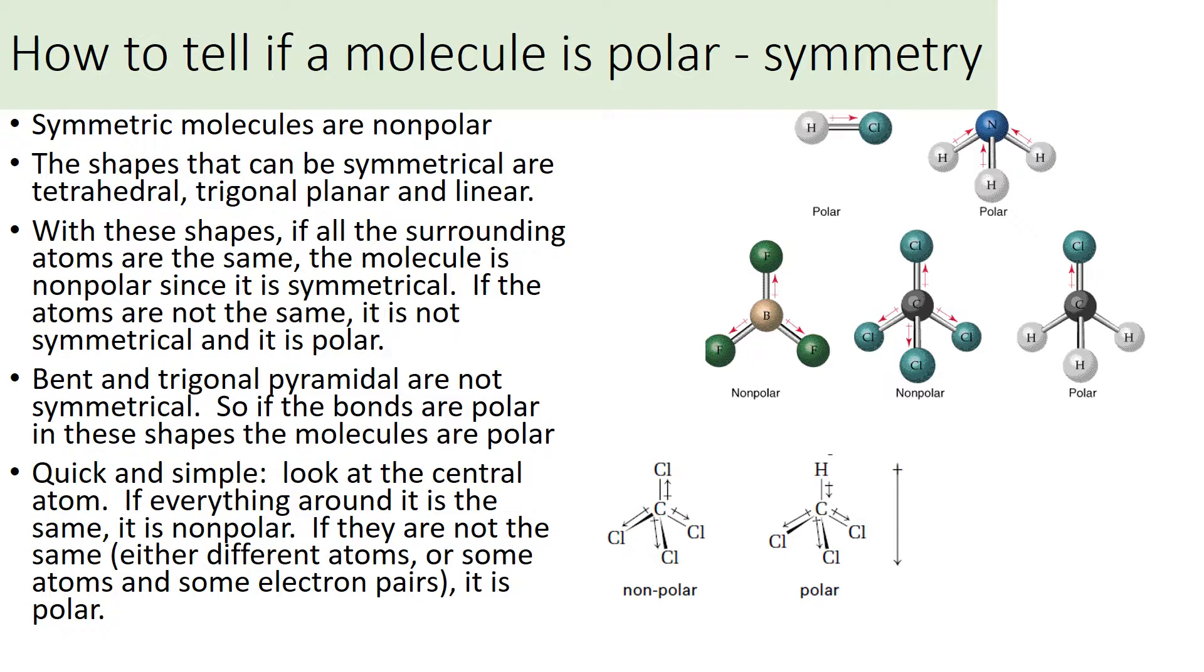So polarity is about the symmetry. So if you look at this molecule right here, hydrogen to chlorine, you've got a positive and a negative end to it. That's polar. If you consider this one, nitrogen with the three hydrogens, since those hydrogens are not across from each other, you end up with a positive and a negative end. So that's polar.